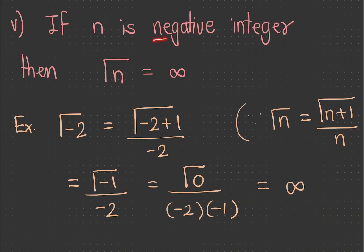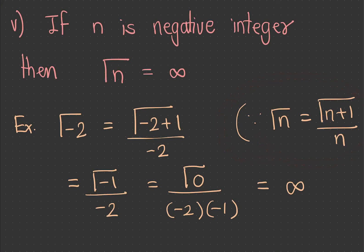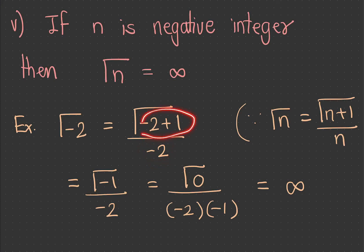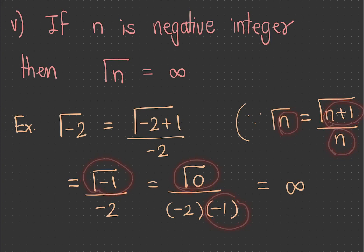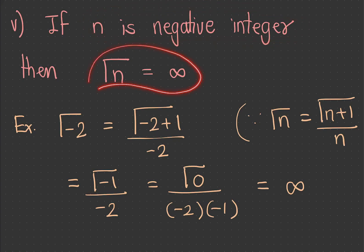The fifth property is: if n is a negative integer, then gamma of n is infinite. For example, for gamma of minus 2, using gamma of n equals gamma of n plus 1 upon n, we get gamma of minus 1 upon minus 2. Then gamma of minus 1 equals gamma of 0 upon minus 1. Since gamma of 0 is infinity, gamma of minus 1 is infinity, and thus gamma of minus 2 is also infinity. So for any negative integer n, gamma of n equals infinity.